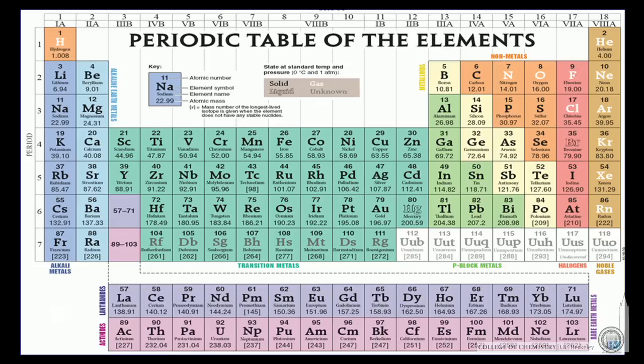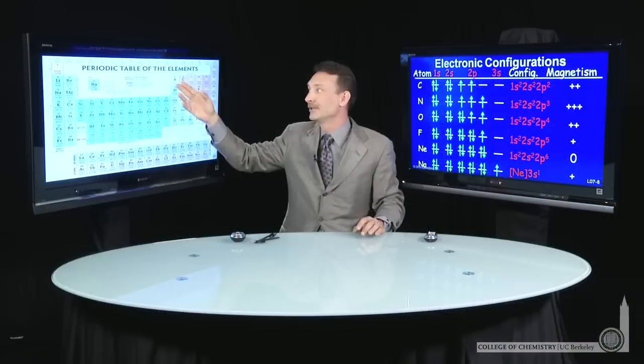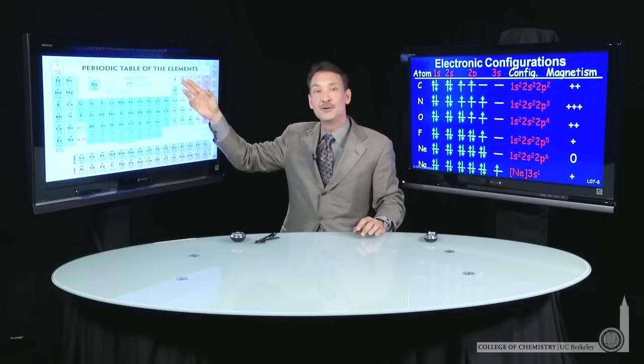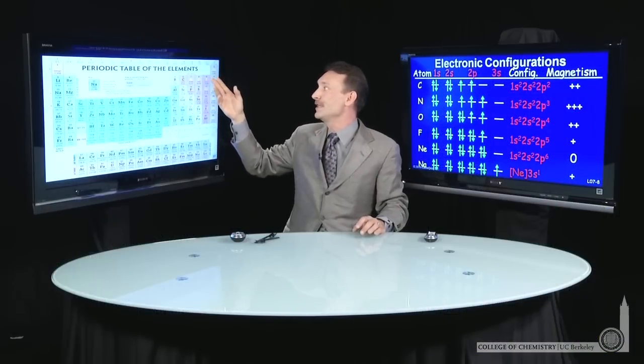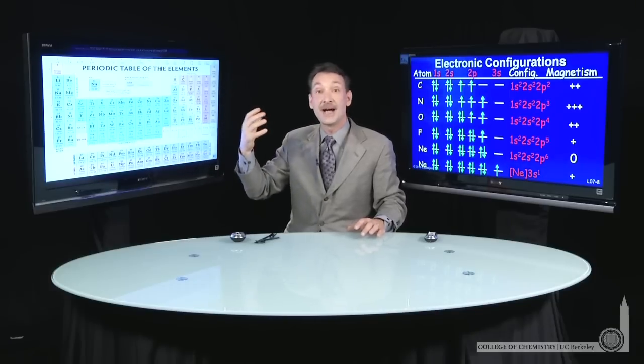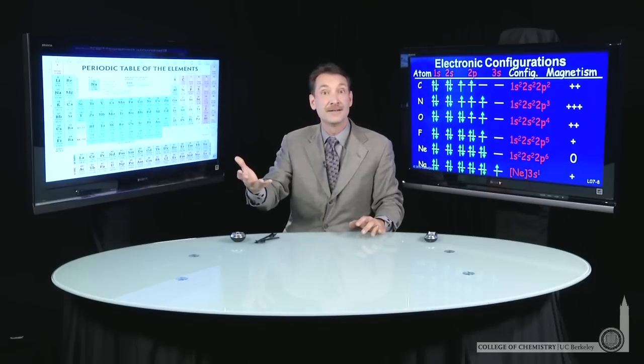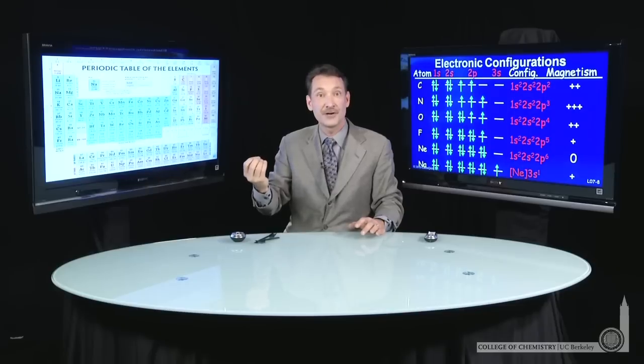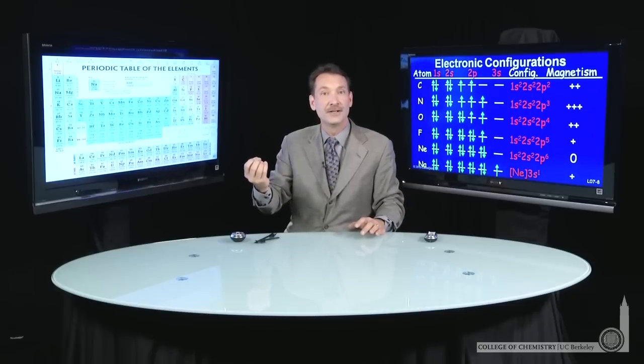And when I get to boron, I start to fill the p orbitals: p1, p2, p3, p4, p5, p6. So you can see the periodic table is set up to accommodate—it reflects this quantum mechanical structure, these orbitals about the atoms.